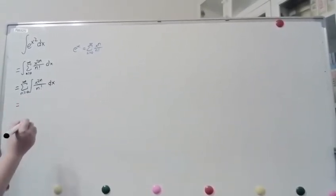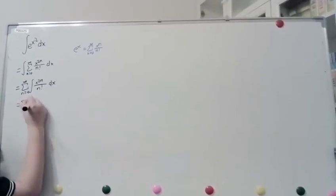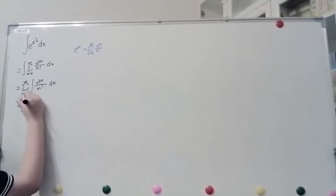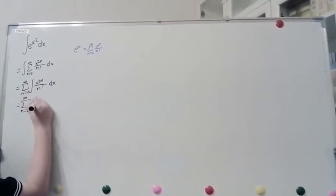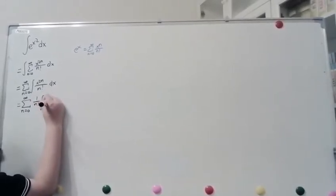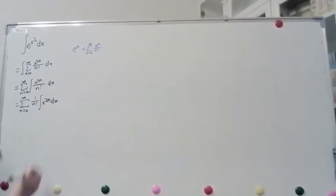We move the 1 over n factorial out of the integral. So, we have, this equals the sum n equals 0 to infinity, move this 1 over n out, and then we add the integral of x to the 2n dx.